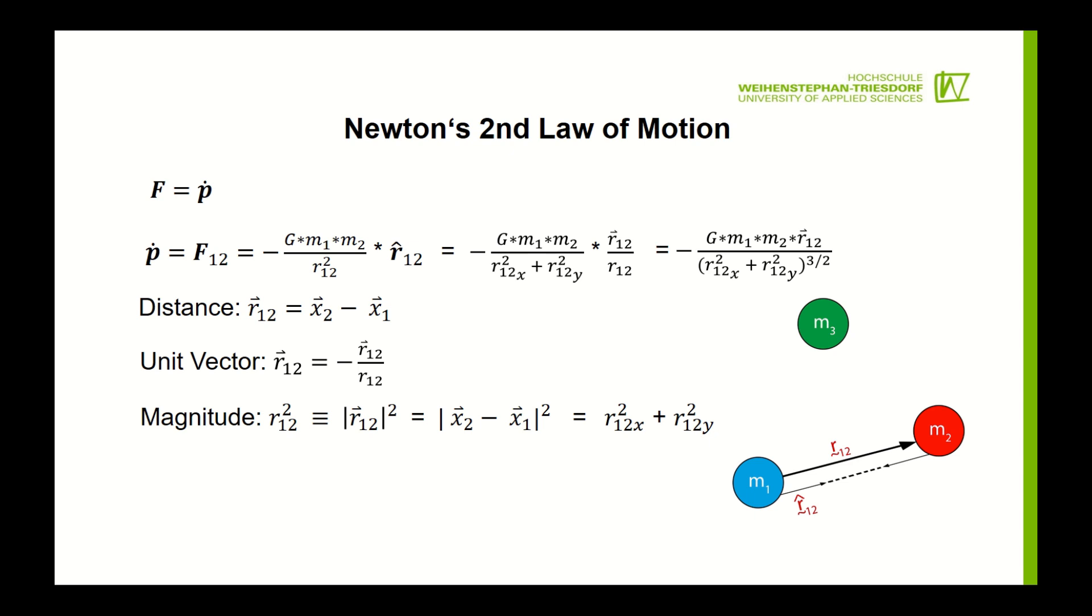Now that we understand the basic physics, let's get back to the real problem. According to Isaac Newton two masses attract each other via gravity, so if we have three masses all three will mutually influence each other. Therefore we have to solve six force equations.